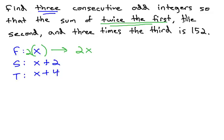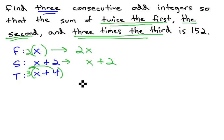We also want the second number. Nothing special about it, just x plus 2. But also, with the third number, we want 3 times the third number. We want to take the entire third number and multiply it by 3, which means if we distribute the 3 through, we get 3x plus 12.